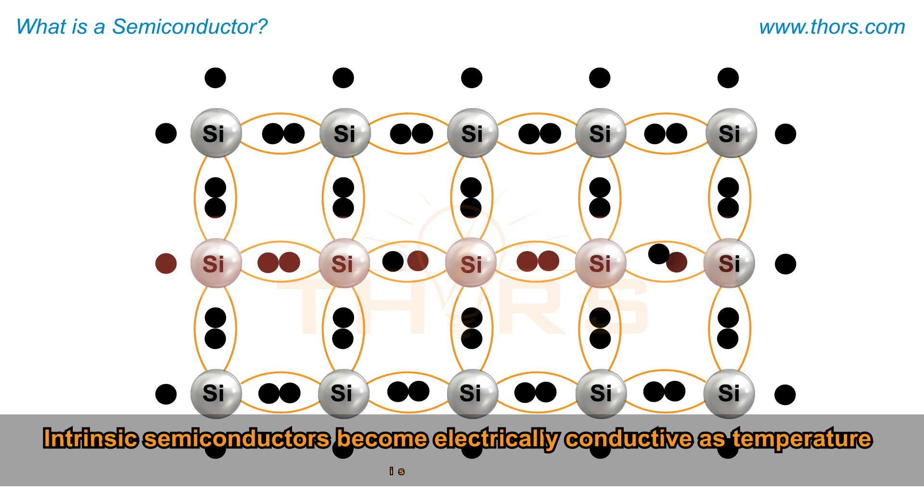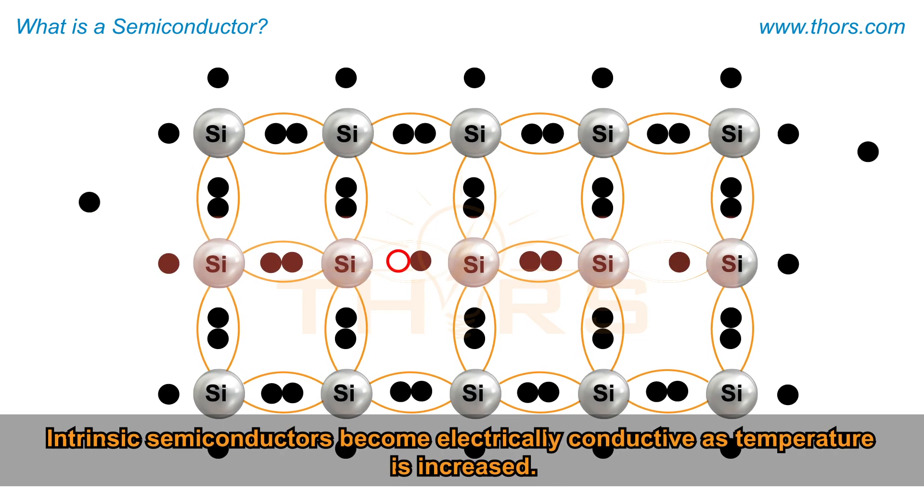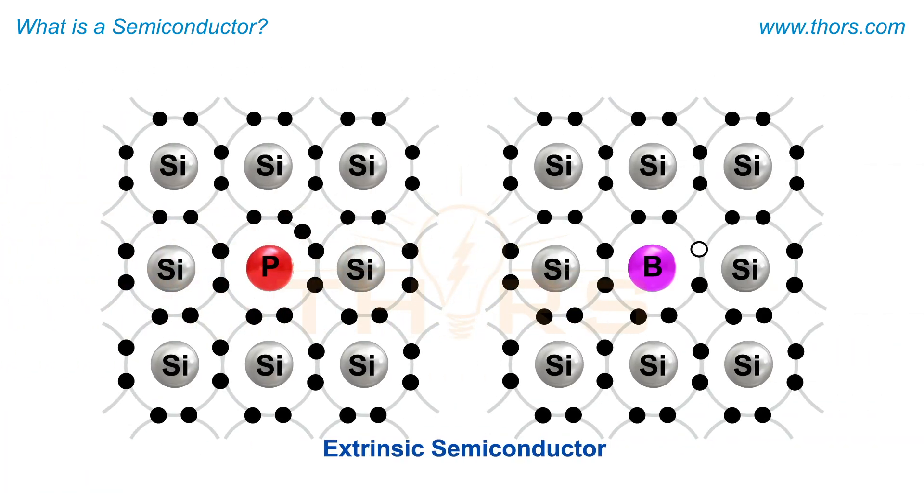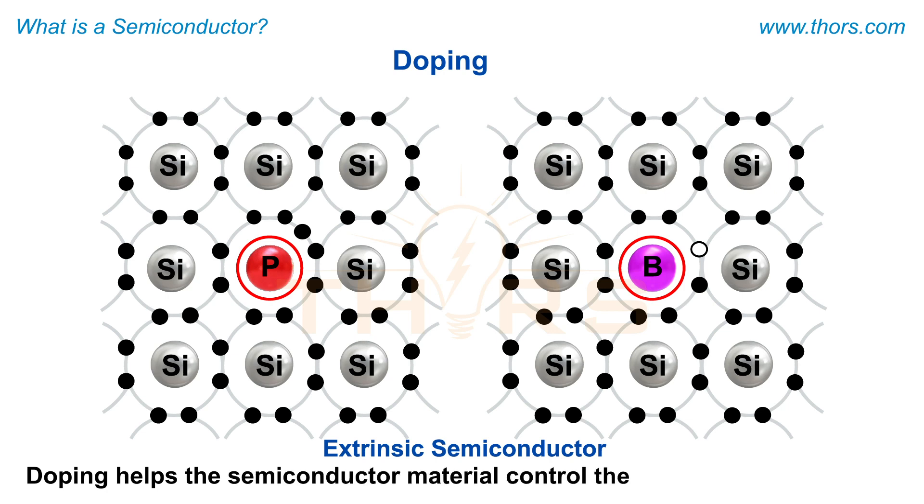However, intrinsic semiconductors become electrically conductive as temperature is increased. Extrinsic semiconductors are formed by doping. Doping is the process of adding dopants or impurities to the semiconductor material to control the electrical conductivity.